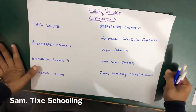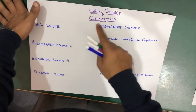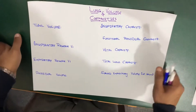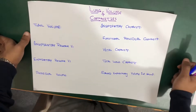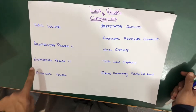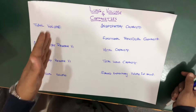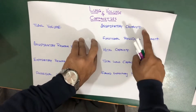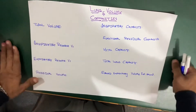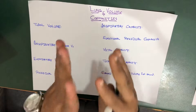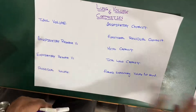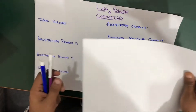Hello YouTube, this is Sam from Tides Schooling. In this session we're going to talk about lung volumes and capacities. This question was asked by Mr. Raja Aves. We'll cover approximately nine things: four volumes — tidal volume, inspiratory reserve volume, expiratory reserve volume, and residual volume — and five capacities: inspiratory capacity, functional residual capacity, vital capacity, total lung capacity, and forced expiratory volume in one second. I'll be using a chart to elaborate.